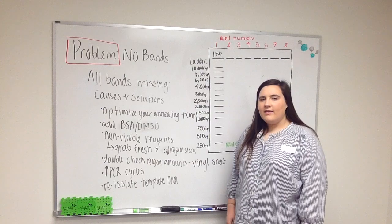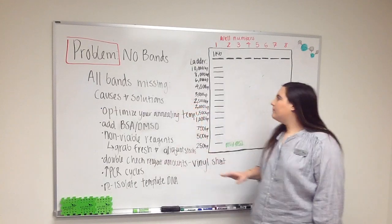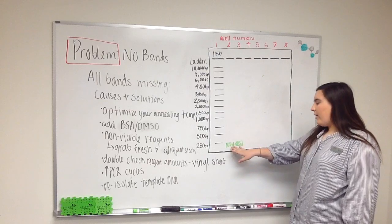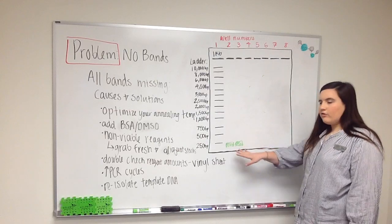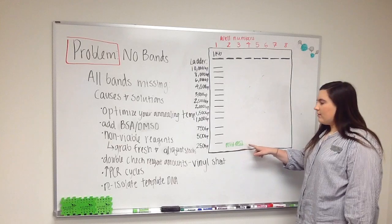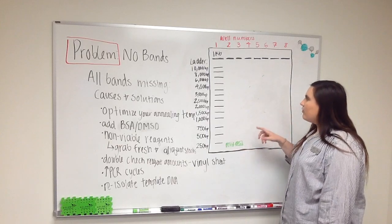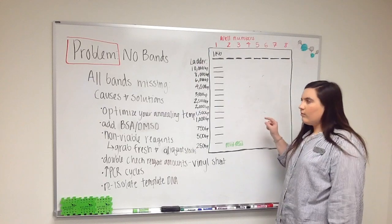The next problem you could be facing is that you didn't get any bands on your gel. Your gel might look something like this where you might have some primer dimers as we discussed earlier towards the bottom of your gel. There are just going to be faint bands at the very bottom. You might also have some DNA fragments scattered throughout, but it's not the bright bands you were looking for.